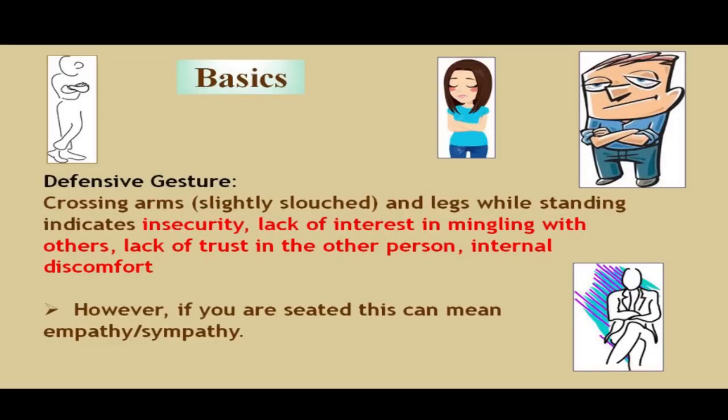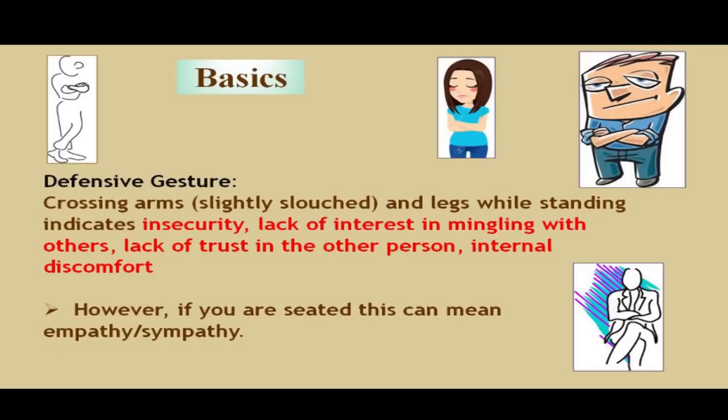Look at some basics, particularly in terms of defensive gestures. Crossing arms while slightly slouched — with the body low and legs pulled together — indicates insecurity, lack of interest in mingling with others, lack of trust in the other person, and internal discomfort. However, if you are seated with someone and holding this posture, it can mean that you are empathizing or sympathizing with the other person — indicating you are not going to interfere, just listening, and fully attentive.